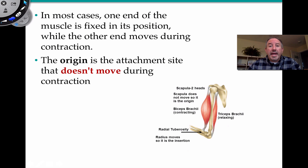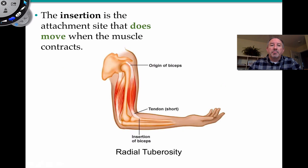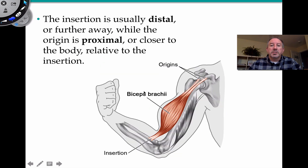In most cases, one end of the muscle is fixed and the other one is going to move during contraction. So the origin is the attachment site. For example, with the biceps brachii, the attachment is to the scapula — that's the part that's not moving during contraction. But the insertion, the radial tuberosity, this part does move. When the muscle contracts, this is what causes the forearm to flex in an upward direction around the elbow joint. The insertion is usually distal, meaning further away from the core of the body, and the origin is usually proximal.